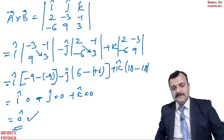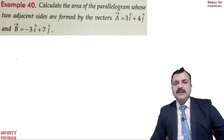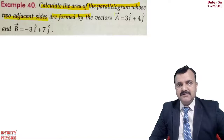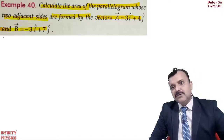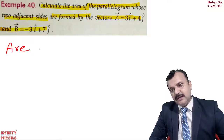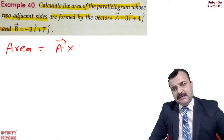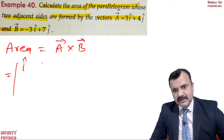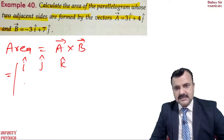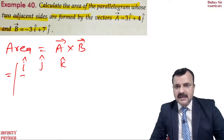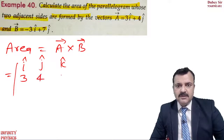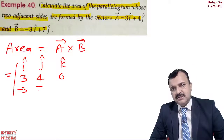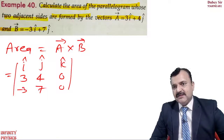Second question: calculate the area of a parallelogram whose two adjacent sides are given in vector form. Note that area is a vector quantity — this is an important point. For vector A: i component is 3, j component is 4, k component is 0 (not given). For vector B: minus 3, 7, and 0.